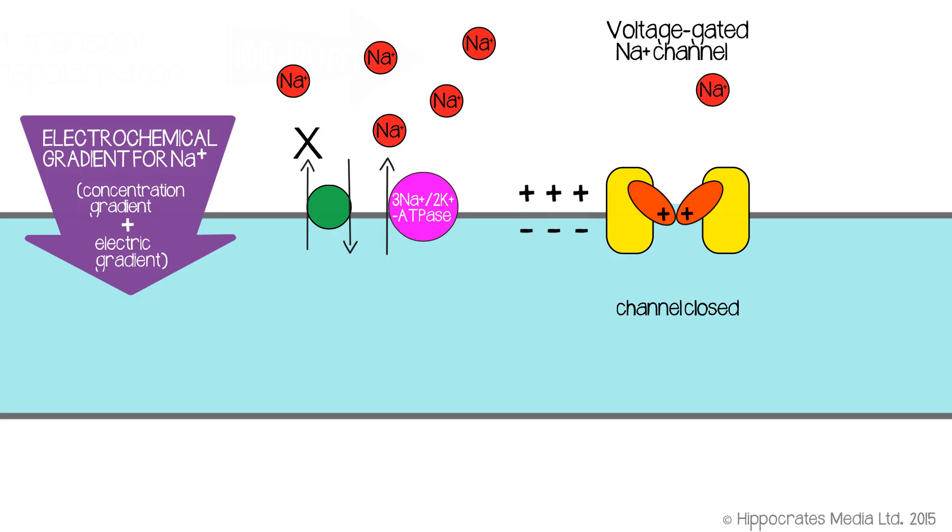A voltage-gated sodium channel will open in response to a depolarization. So in other words, if you can find a way to make your membrane potential slightly more positive inside than it was, so if you start at minus 70 but then make the interior slightly more positive, maybe minus 60, minus 50, the voltage-gated sodium channels will begin to open.